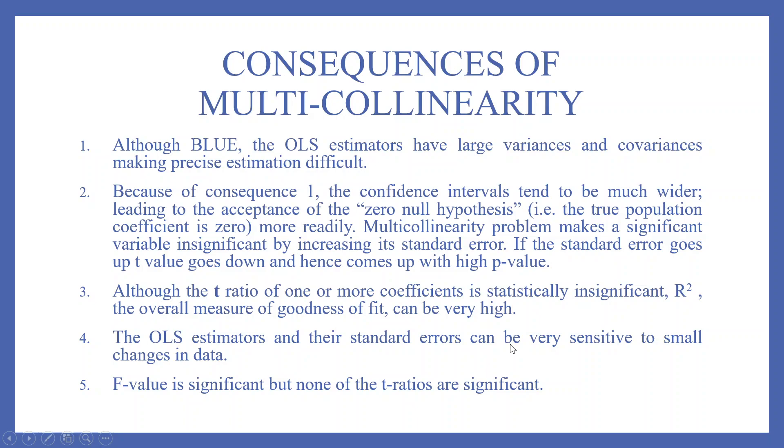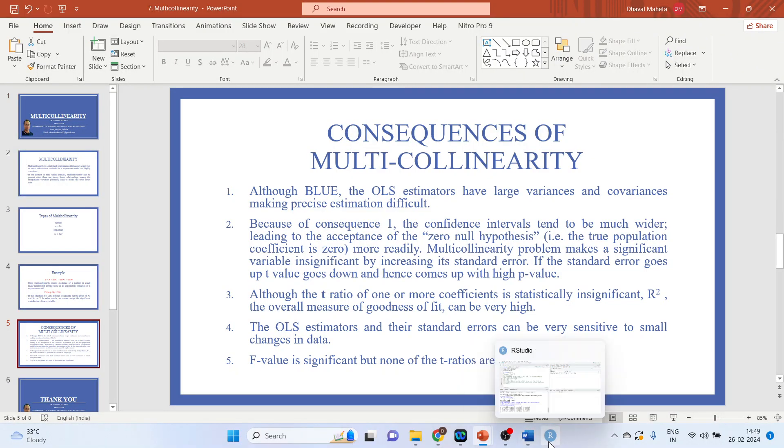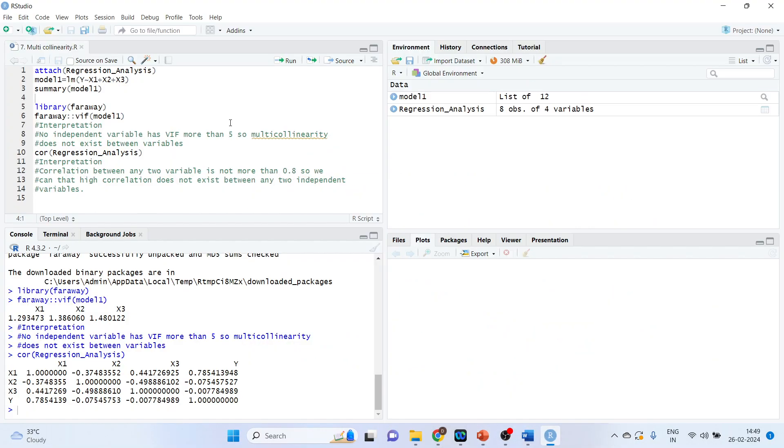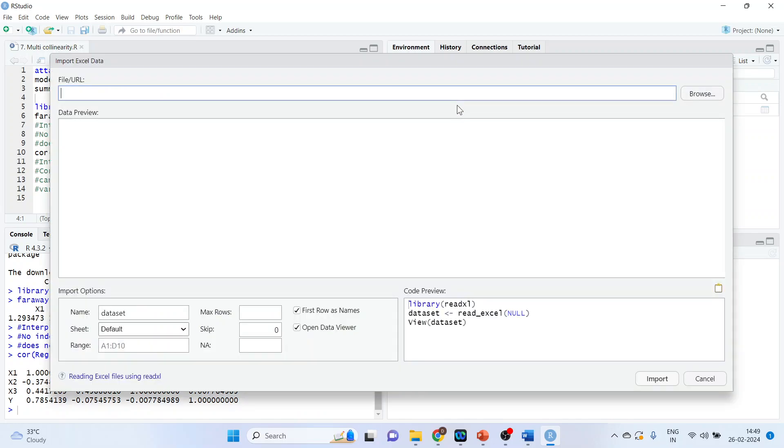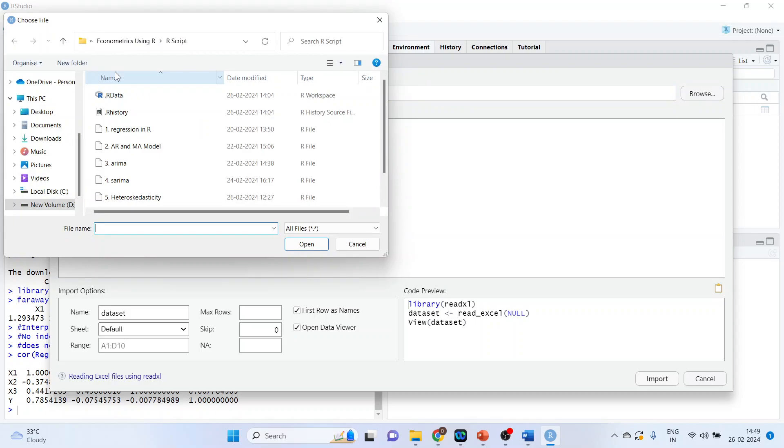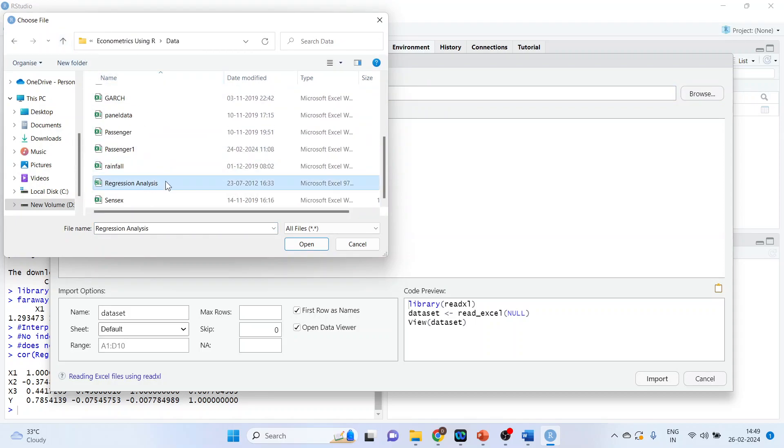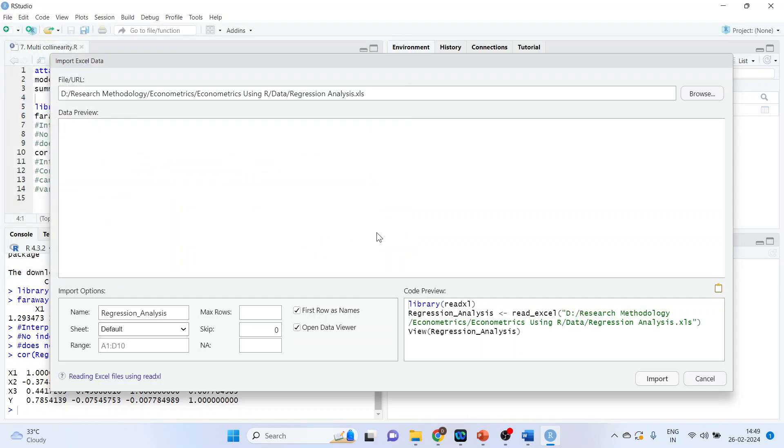So let's proceed further on how we can detect multicollinearity in R. For this we will go in R. The first thing which we have to do is import the data set. The name of the data set is regression analysis. Press open, import.